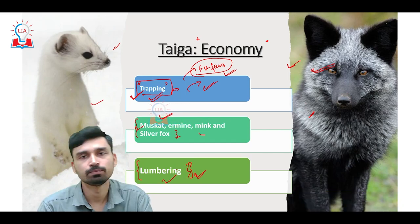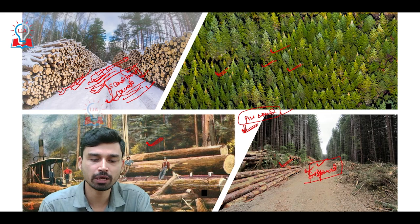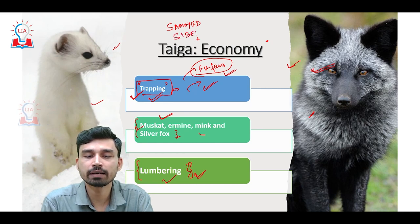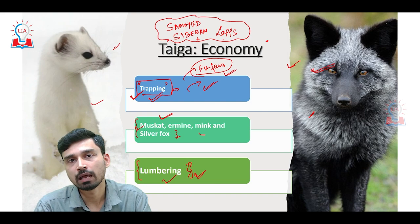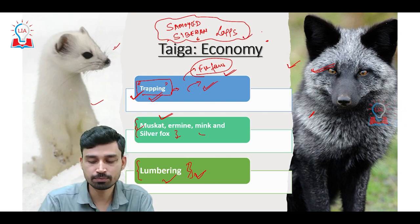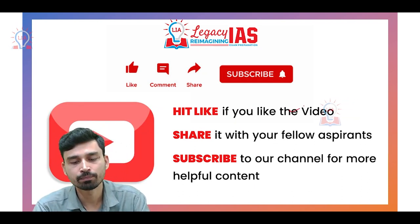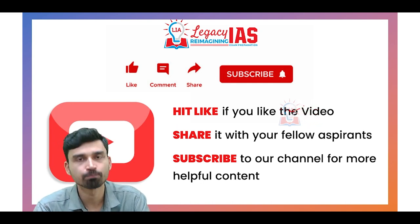As for the major inhabitants of this region, two tribes to remember are the Samoed and the Siberian tribes. We also have the Lapps in Finland living in this region. So Samoed, Siberian, and Lapps are the major tribes of the Taiga region. That concludes the discussion on the Taiga type of climate. If you liked the video, please hit the like button, share it, and subscribe to our channel for more content.